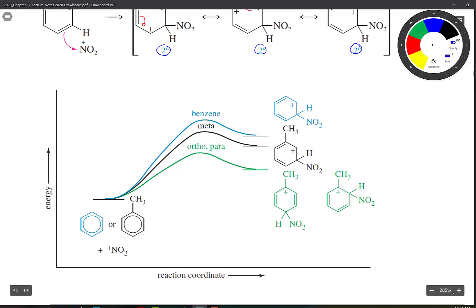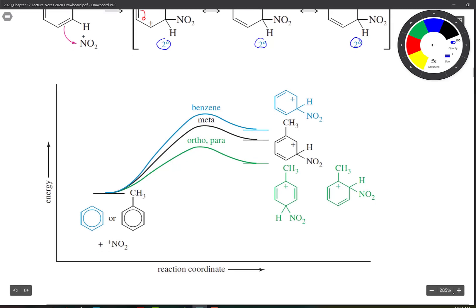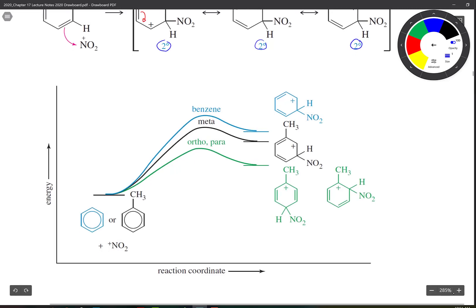If we have toluene, which is our methyl group here, if we do ortho and para, we get about the same energy profile here, same activation energy. And for meta, a little higher activation energy. So that increase in activation energy is what makes that meta less likely.